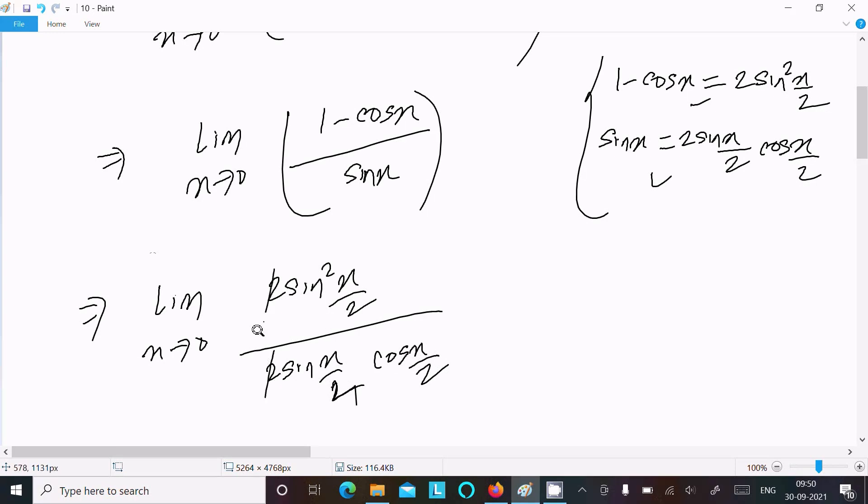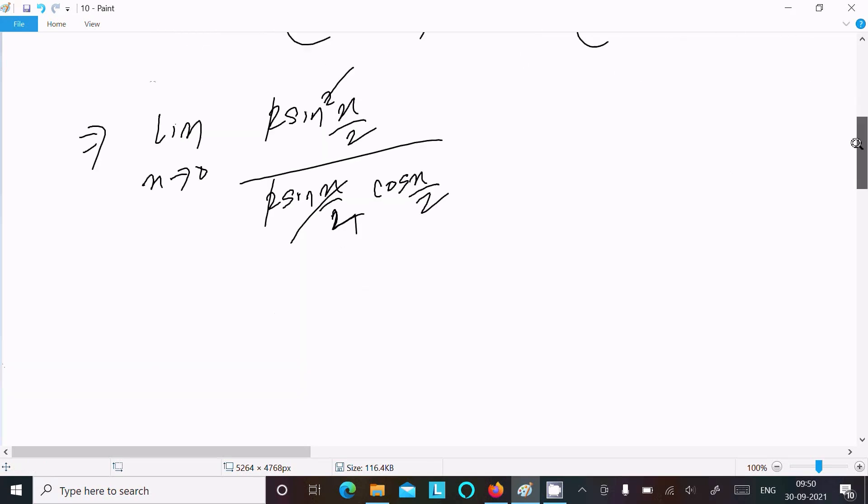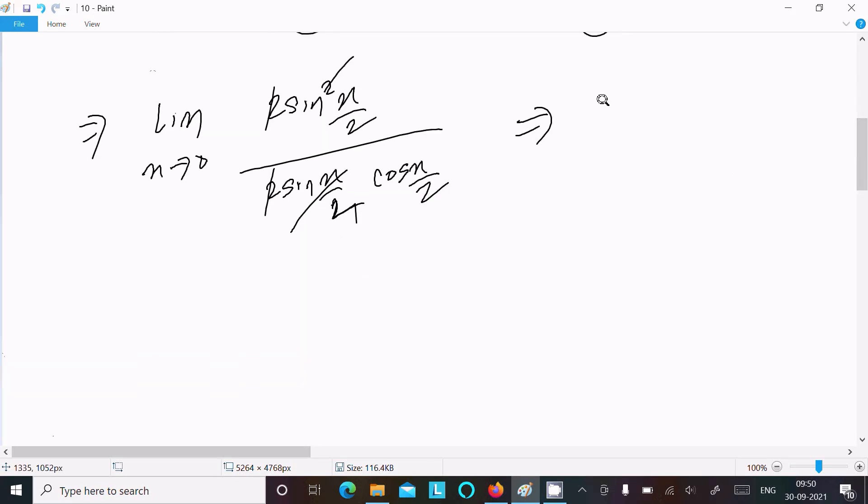After that, the two cancels, sin(x/2) cancels, and now you can get lim x→0 of sin(x/2) divided by cos(x/2).